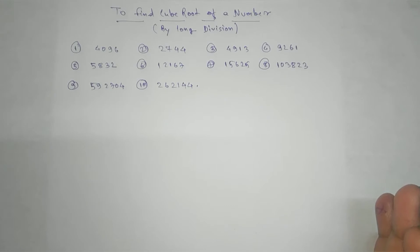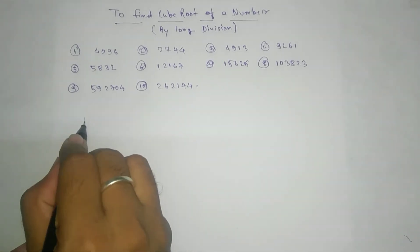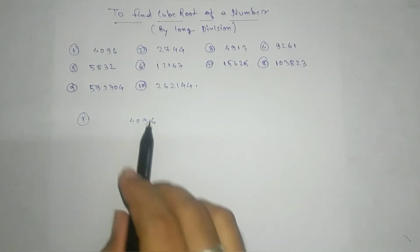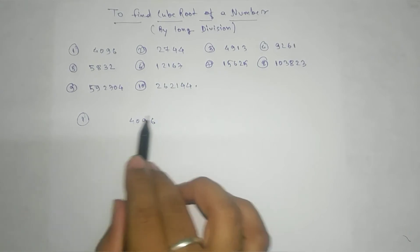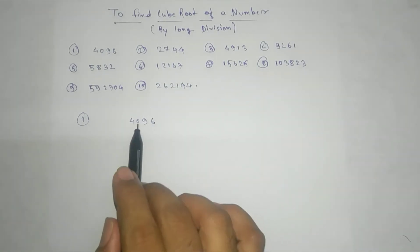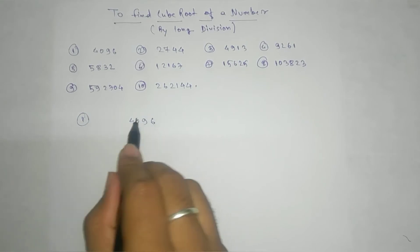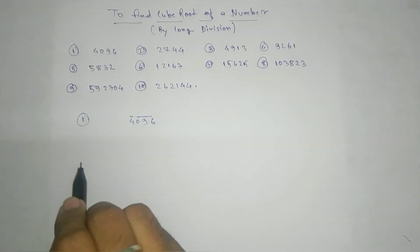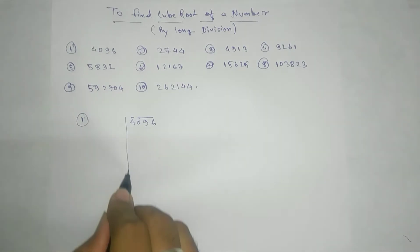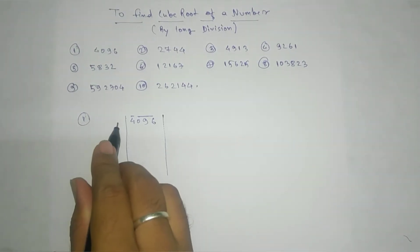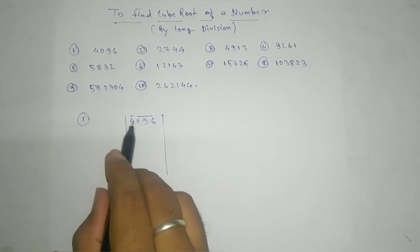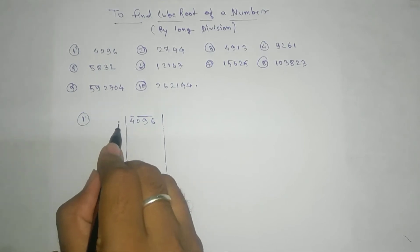First, 4096. If we take 4096, the way we have taken pairs in square root, here we will take three sets from the right-hand side — three pairs — and whatever remains, 2 digits or 1 digit, we take here. Now your target is to find the smallest cube which is equal to or less than this first set. Here we have only 4.